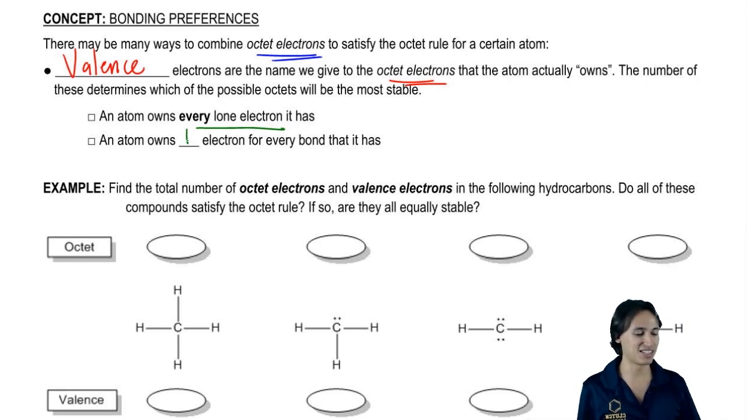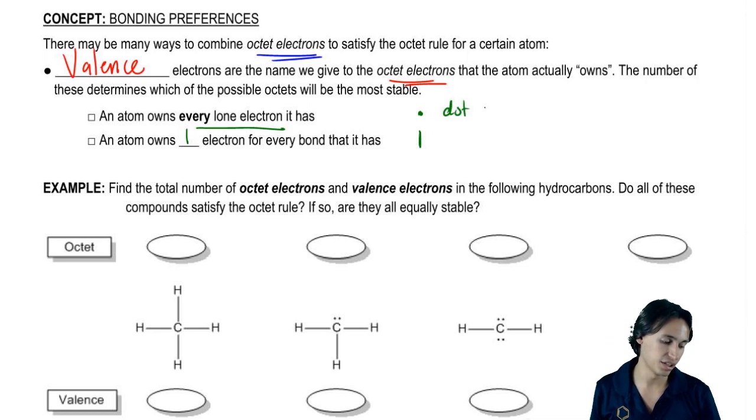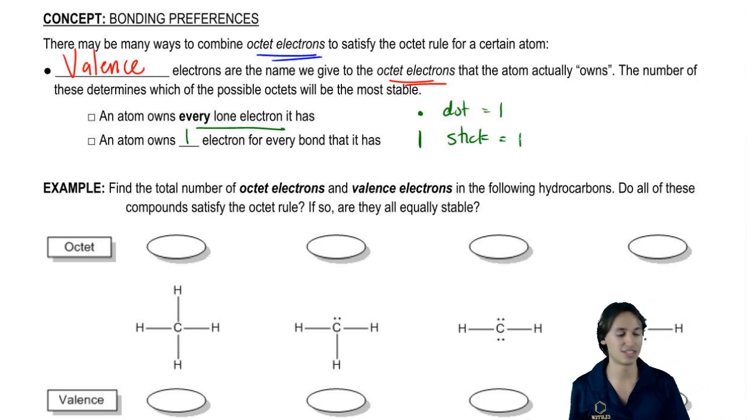A really nice easy way to say this is that it's going to own every dot, one electron for every dot and it's also going to own one electron for every stick. So I'm just going to say dot equals one and also stick equals one. That's just another way to say it.